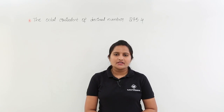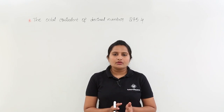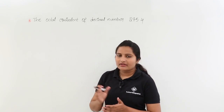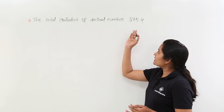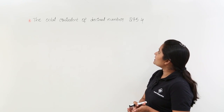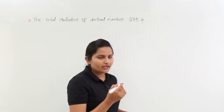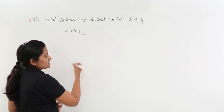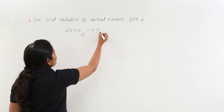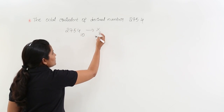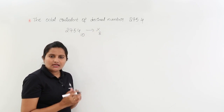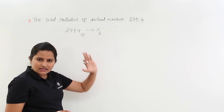In this class we are going to discuss the octal equivalent of a given decimal number. We know how to convert any decimal into any other number system. In that series, the problem is: the octal equivalent of decimal number 275.4. The given number 275.4 has base 10, and we need to convert it into octal. This comes under decimal to any other number system conversion.